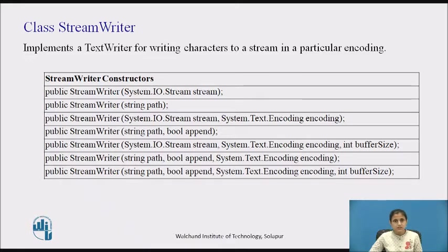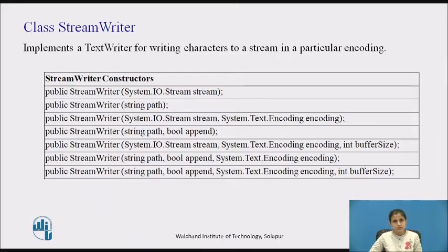A Unicode Transformation Format (UTF) is a way to encode that code point. The Unicode standard uses formats such as UTF-8, UTF-16, and UTF-32. UTF-8 represents each code point as a sequence of 1 to 4 bytes. UTF-16 represents each code point as a sequence of 1 to 2 sixteen-bit integers. UTF-32 represents each code point as a 32-bit integer.